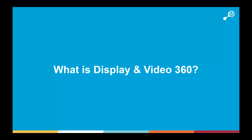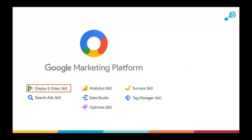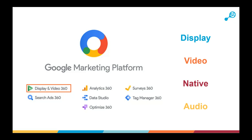So what is Display and Video 360? It's part of a platform called the Google Marketing Platform. Google has a free and a premium level of advertising and analytics, and the Google Marketing Platform is the enterprise level. It covers data gathering, data analytics, and advertising. The area we're discussing — Display and Video 360 — covers display, video, native, and audio advertising all within one platform.